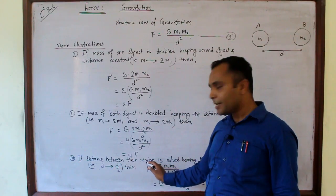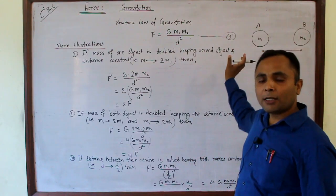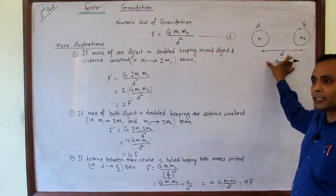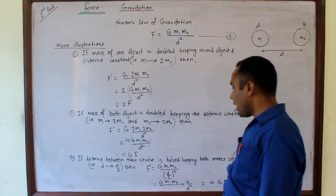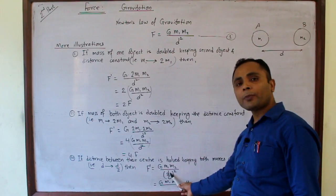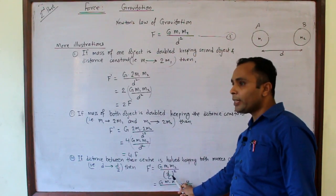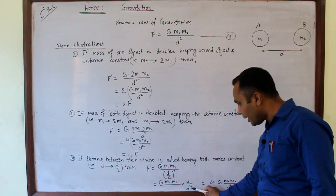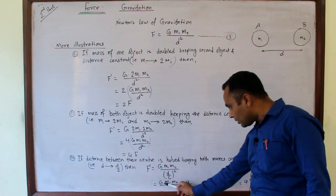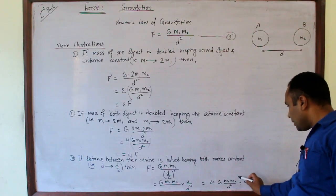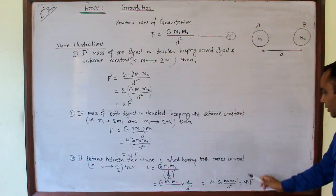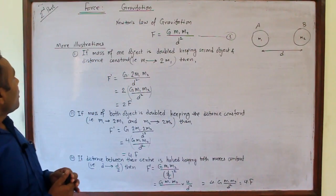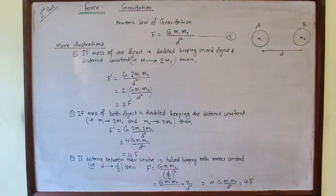Now, if the distance between their centers is halved while keeping both masses constant — M1 and M2 remain the same but the distance is now D/2 — then F dash = GM1M2/(D/2)² = GM1M2/(D²/4). Bringing 4 to the numerator, it becomes 4GM1M2/D², which is 4F. Therefore, the force of gravitation also becomes 4 times the previous force.